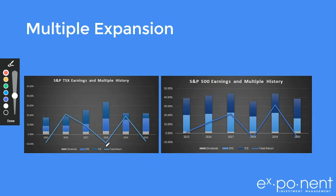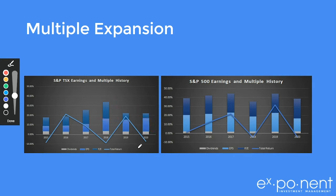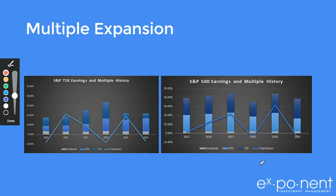Sometimes the return is driven by EPS growth, and sometimes the blue line — multiple expansion — is the driver. You can see that in 2018 the multiple expansion was quite large. The dividends is a small line. My point here is that in the U.S. we have a massive multiple expansion going on, much larger than the earnings expansion or growth, because typically these two components are more or less the same size.